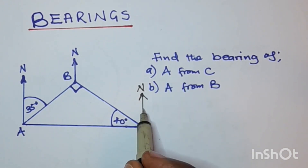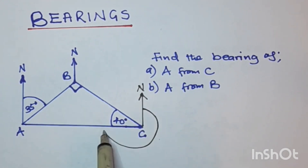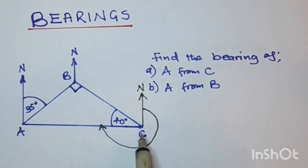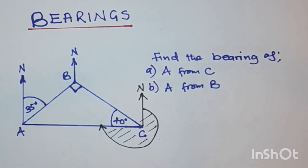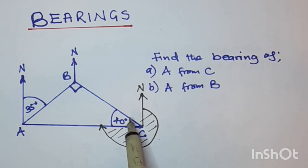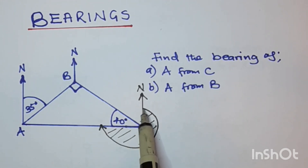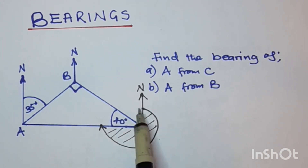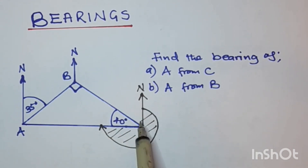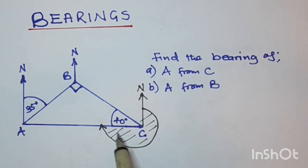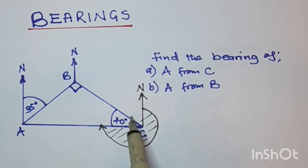Bearing is measured from the north clockwise until we meet the line AC. So we move from the north clockwise until we meet this line joining A and C. This is the bearing they want us to find. To find this bearing we need to know this angle here, so that we can say the total turn — 360 — minus this angle plus this angle.